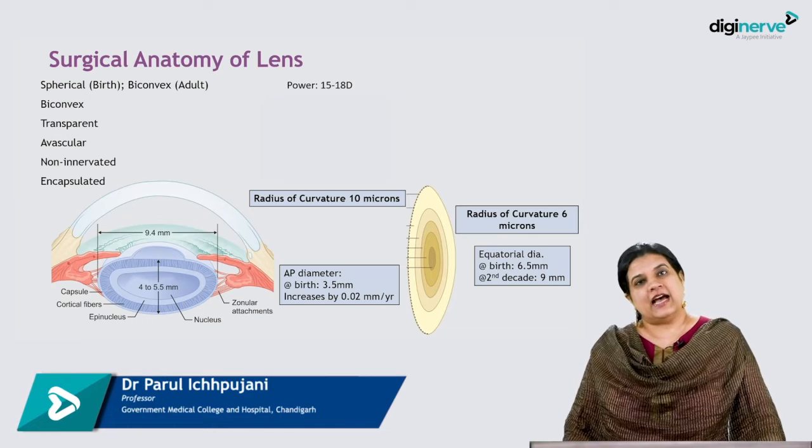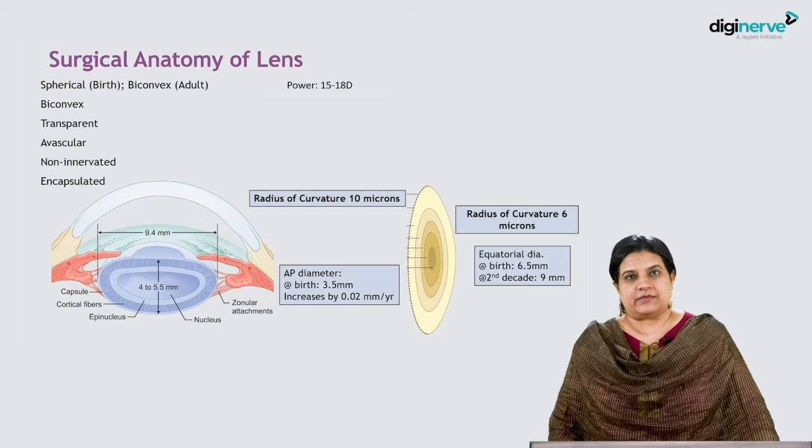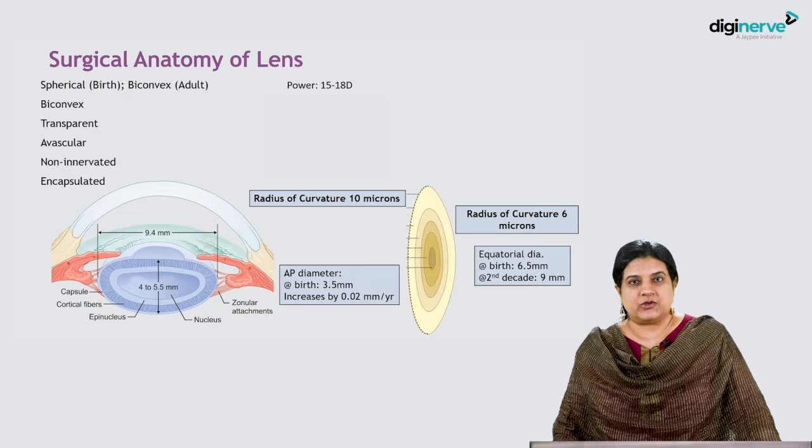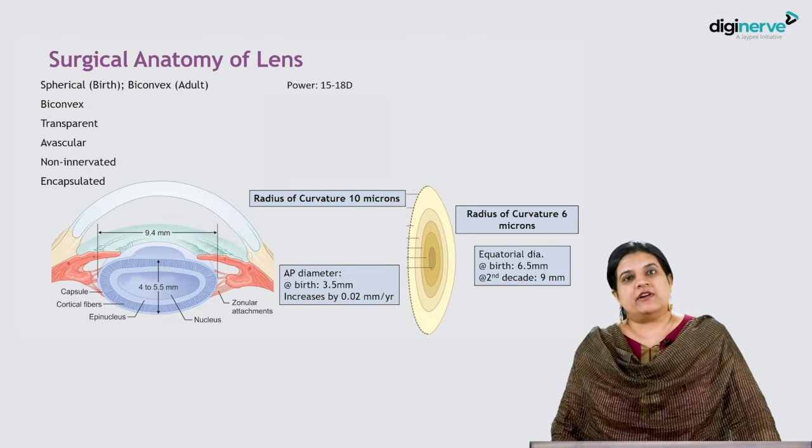Before we go further, let's have a look at the surgical anatomy of the lens. The lens is spherical at birth and becomes biconvex by adulthood. It's transparent, avascular, non-innervated, and encapsulated.